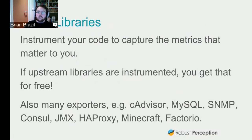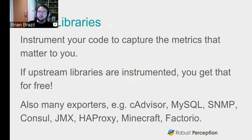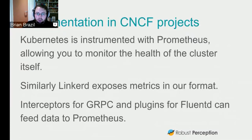If everyone instruments using well-instrumented libraries you get that for free. For things that aren't instrumented — like MySQL — there are exporters that convert metrics. There are lots of integrations: SNMP for networking, Consul, JMX, HAProxy, and of course Minecraft and Factorio for fun. Looking across the Cloud Native Computing Foundation, Kubernetes itself is instrumented with Prometheus so we integrate with each other. You can monitor the health of the cluster. Linkerd has metrics in our format and there are interceptors for gRPC and plugins for Fluentd.